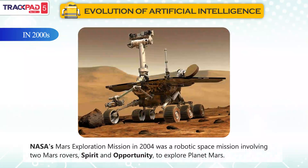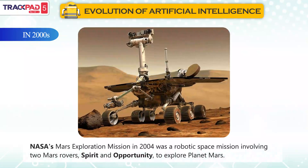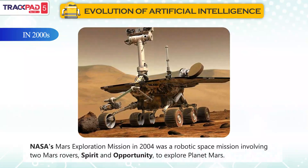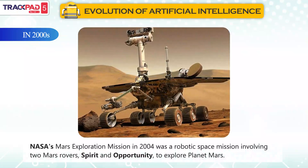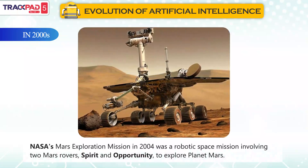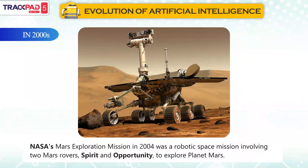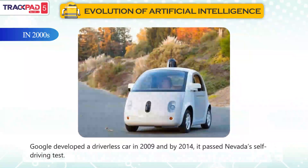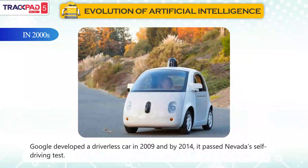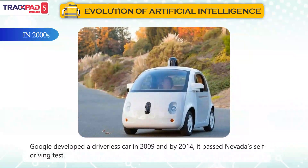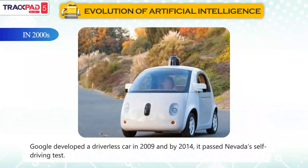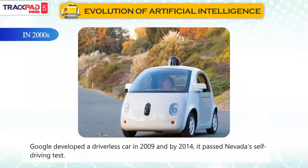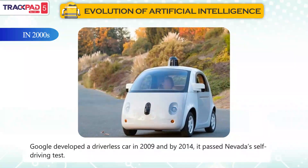NASA's Mars exploration mission in 2004 was a robotic space mission involving two Mars rovers, Spirit and Opportunity, to explore planet Mars. Google developed a driverless car in 2009, and by 2014 it passed Nevada's self-driving test.